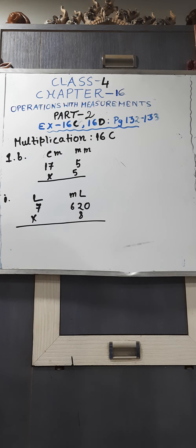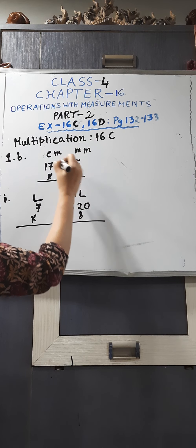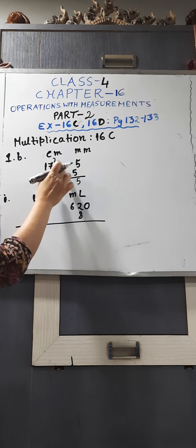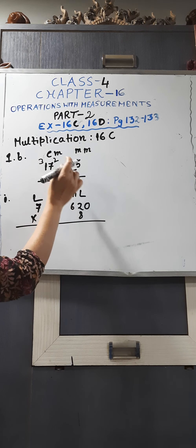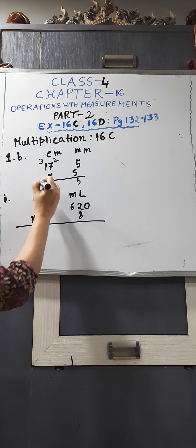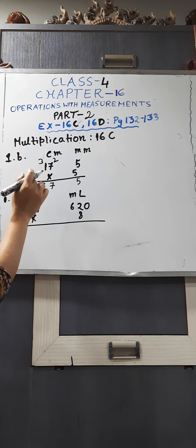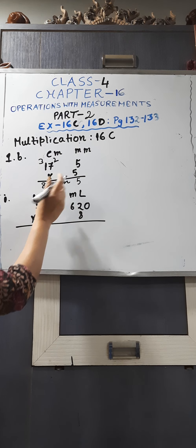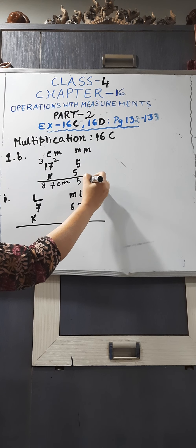We will do simple multiplication. 5 fives are 25, 2 is carried. 5 sevens are 35 plus 2 is 37, 3 is carried. 5 ones are 5 plus 3 is 8. Now it is time to write your units. You will write centimetre here — 87 centimetre and then 5 millimetre.